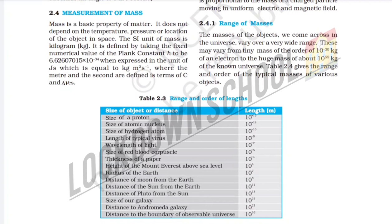The kilogram is defined by taking the fixed numerical value of the Planck constant h to be 6.6207015 × 10⁻³⁴, when expressed in the unit of joules (kg·m²·s⁻¹), where the meter and the second are defined in terms of c and delta VCS.